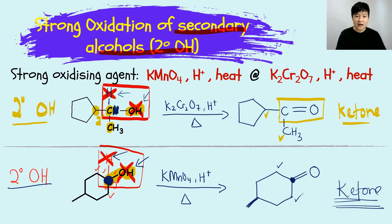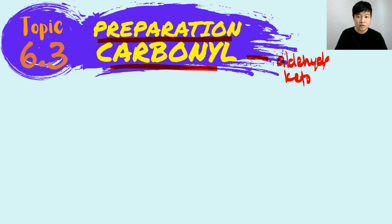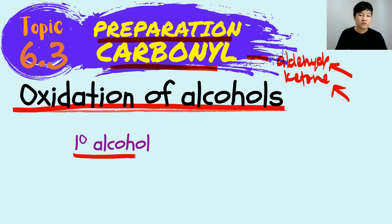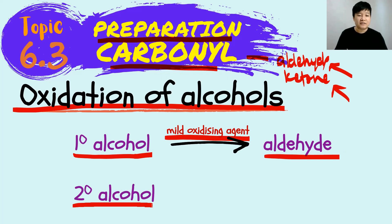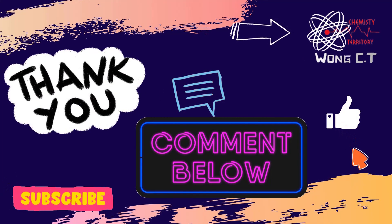As a conclusion for this video: we can prepare a carbonyl compound — whether aldehyde or ketone — using the oxidation of alcohol. To produce aldehyde, oxidize primary alcohol using a mild oxidizing agent. To produce ketone, oxidize secondary alcohol using a strong oxidizing agent. I hope this video helps you understand how the oxidation of alcohol works to prepare carbonyl compounds. If the video helped you, please like, share it with your friends, subscribe to this channel for more videos. Thank you for watching and I'll see you in the next video.